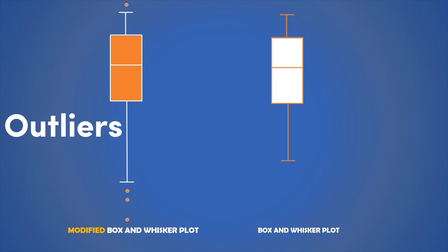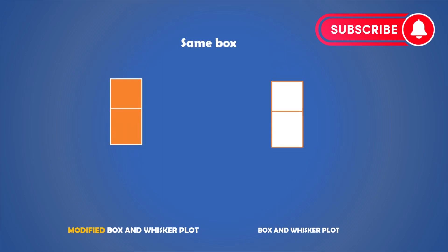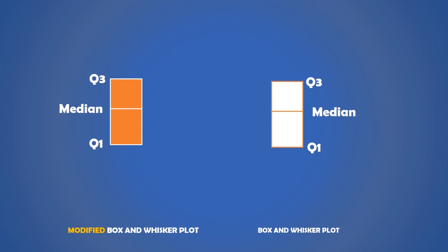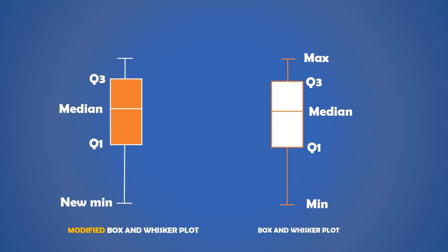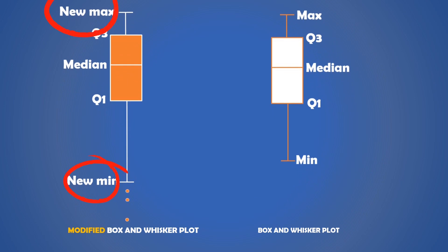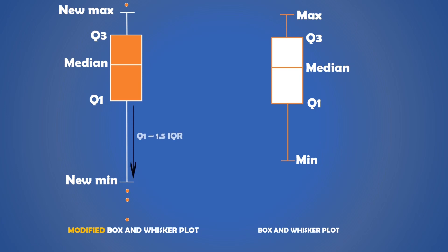When you have a modified box plot, there are some things you need to know. The box remains the same as the ordinary box plot, with the middle line being the median, and the upper and lower lines being the third and the first quartiles respectively. However, the Whiskers are defined differently. The Whiskers of the ordinary box plot extend to the minimum and maximum values, but for the modified box and Whiskers Plot, the Whiskers only extend to the new minimum or the new maximum values. The new minimum is the smallest value of the data set that is within 1.5 times the interquartile range from Q1. The new maximum is the largest value of the data set that is within 1.5 times the interquartile range from Q3. Anything outside these two points — the new minimum and the new maximum — is considered an outlier.